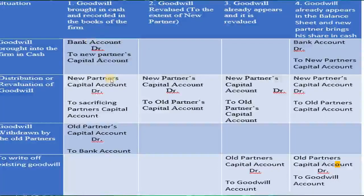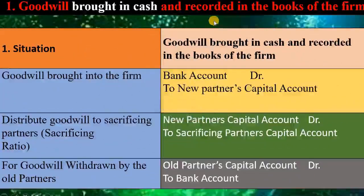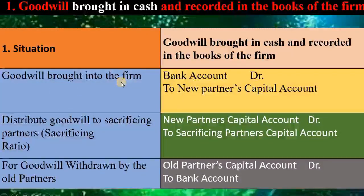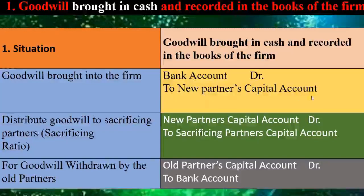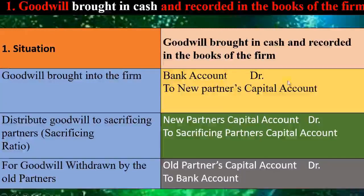Let us start with the first one — goodwill bought in cash and recorded in the books of the firm. In this situation there are 3 major transactions. First, goodwill brought into the firm. For goodwill brought into the firm, we have the journal entry: cash comes in, so bank account debit; credit the giver — the new partner has given the amount — so new partner's capital account. Whenever cash is brought in for goodwill, the entry is bank account debit to new partner's capital account.